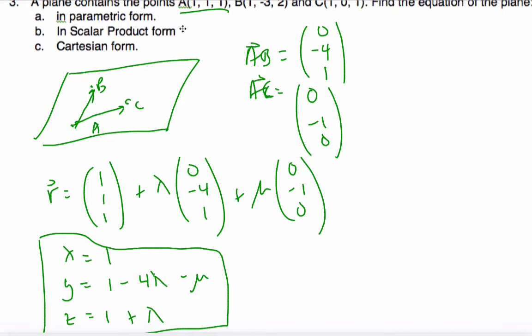Converting to the scalar product form? Well, if I want to convert to the scalar product form, I need to find the normal vector. And the normal is going to be the cross product of my two direction vectors. So if I cross product these, AB is 0, minus 4, 1, and AC is 0, negative 1, 0.